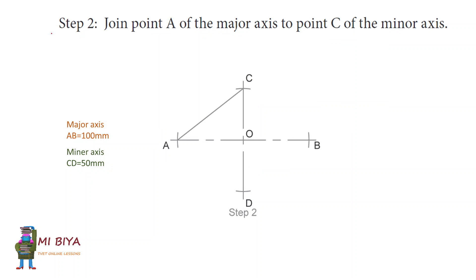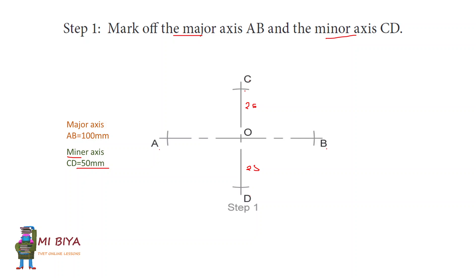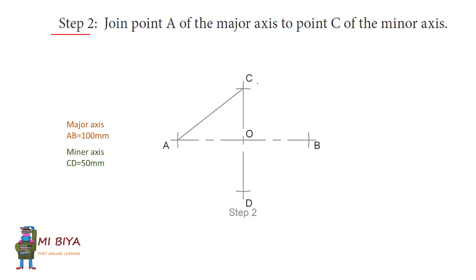In Step 2, because you've got points from the previous slide, what you have to do now is take your ruler and draw the line that connects those points. That line is already here, so you are done with Step 2. That was so simple.